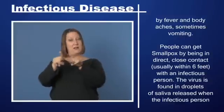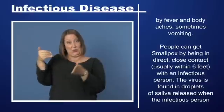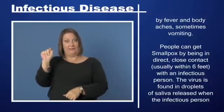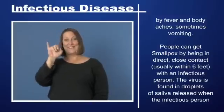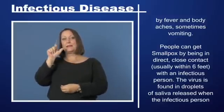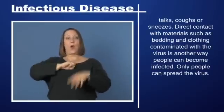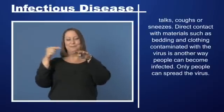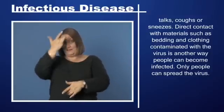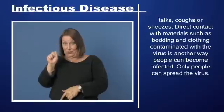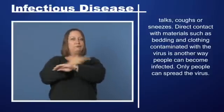People can get smallpox by being in direct close contact — usually within six feet — with an infectious person. The virus is found in droplets of saliva released when the infectious person talks, coughs, or sneezes. Direct contact with materials such as bedding and clothing contaminated with the virus is another way people can become infected.